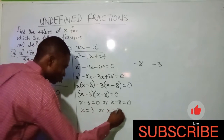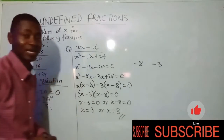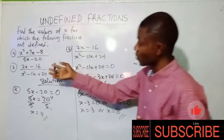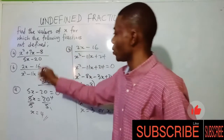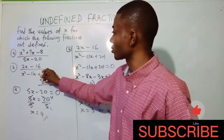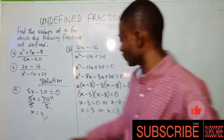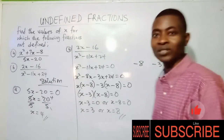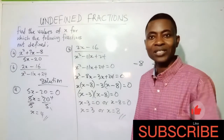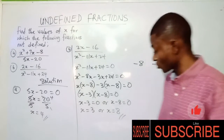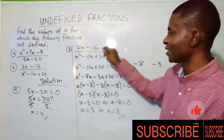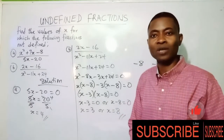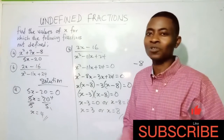This means x minus 3 equals zero or x minus 8 equals zero, giving x equals 3 or x equals 8. That is our final answer. So for this second fraction to be undefined, x must equal 3 or x must equal 8 — these are the two conditions.